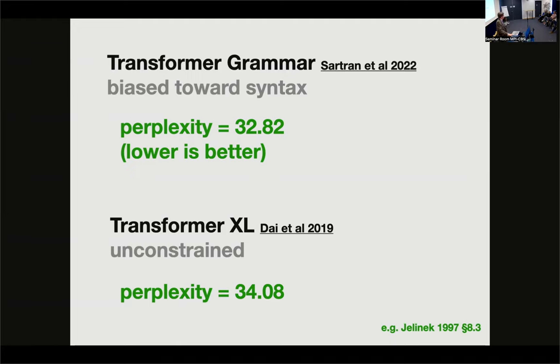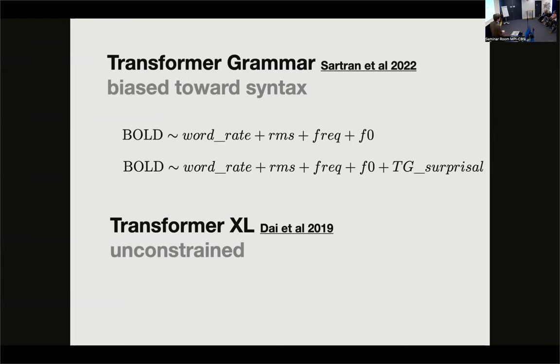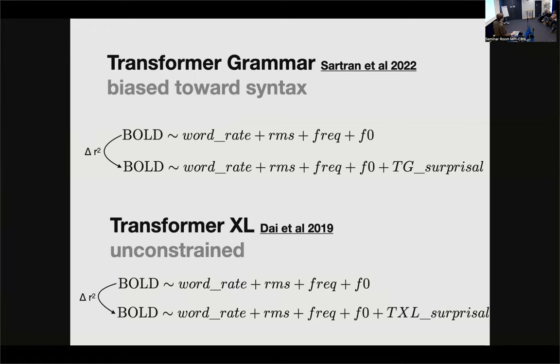To use these models to localize syntax in the brain, we asked by how much does adding surprisals, word by word surprisal values from them, improve a mass univariate analysis of bold time series. This improvement, so see how we're going from the regression that doesn't have it to regression where the surprisals added in as another feature. The improvement, we can quantify this improvement in terms of an R squared value, which we can find using cross validation. So by how much we know R squared, the correlation coefficient with the bold data is going to improve. It's going to improve if you add another predictor which is not totally garbage. But how much does it improve? Does it improve by a lot or does it just improve by a little? That's the game plan.